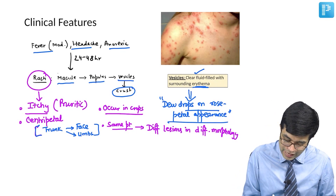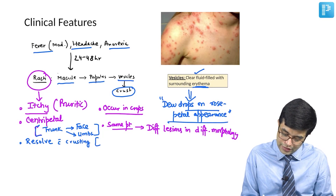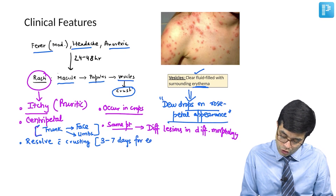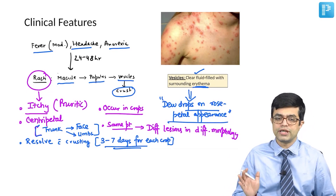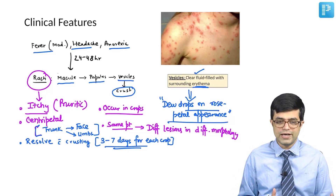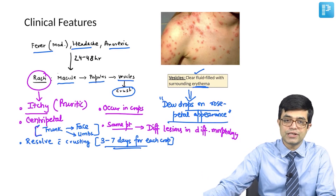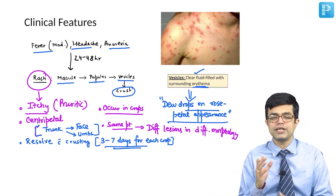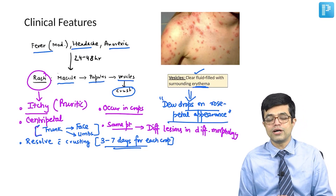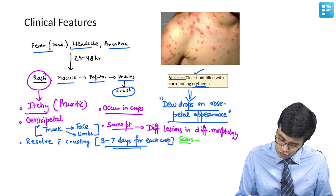Each group of vesicles tends to resolve with crusting, which usually occurs within three to seven days per crop. Generally, two to three crops appear, and the chickenpox settles down around seven to eight days. Some children may have very mild one or two crops, while others may have extensive rash all over the body. The general rule is: the younger the child, the milder the infection; the older the child, the more severe. Lesions usually do not heal with pigmentation, though some post-inflammatory scars may be left, which are more common in adolescents and adults than in children.